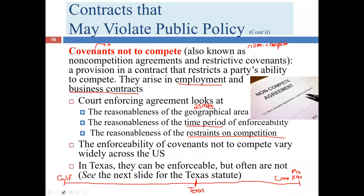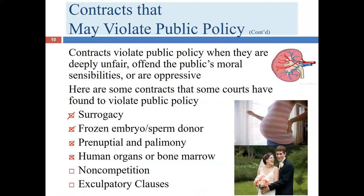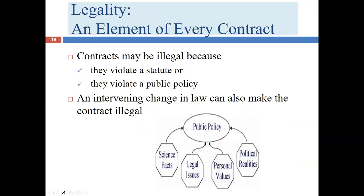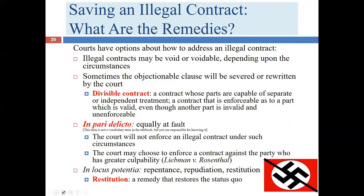We have now covered all our public policy issues: surrogacy, frozen embryos and sperm donation, premarital agreements, palimony agreements, contracts for human organs or bone marrow, non-competes, and exculpatory clauses. When a contract has some illegality in it, a lawful contract is generally valid, while a contract for an illegal purpose or with an illegal subject matter is typically either void or voidable.